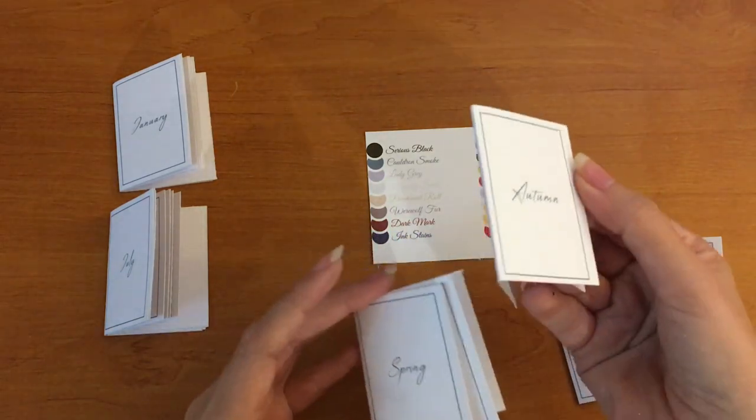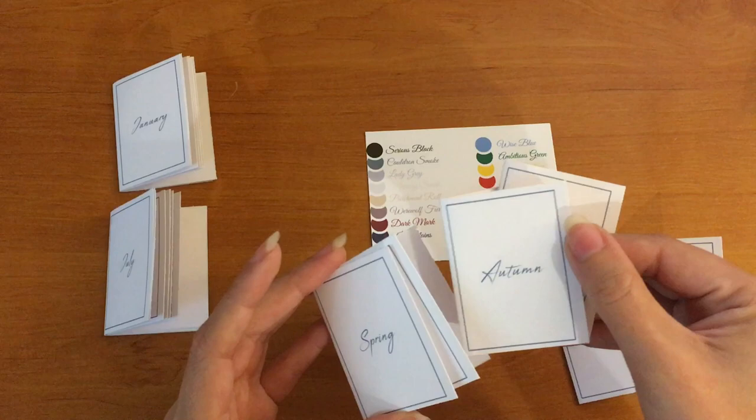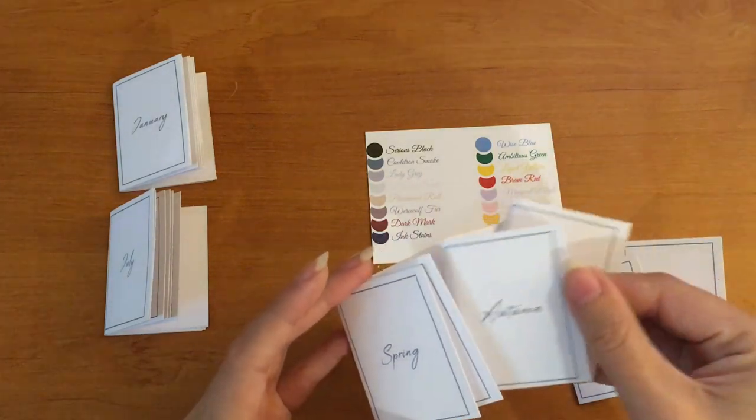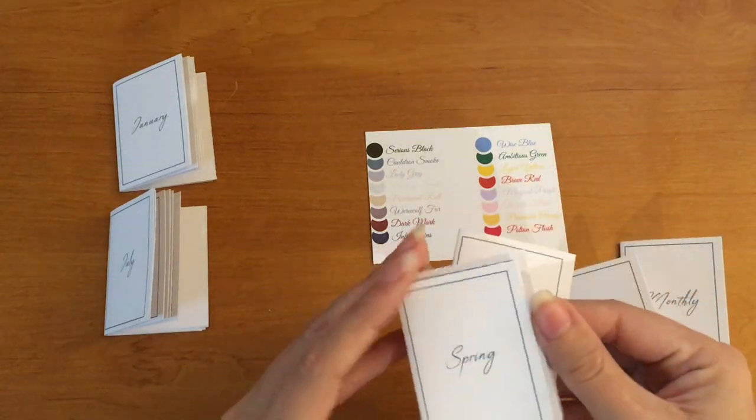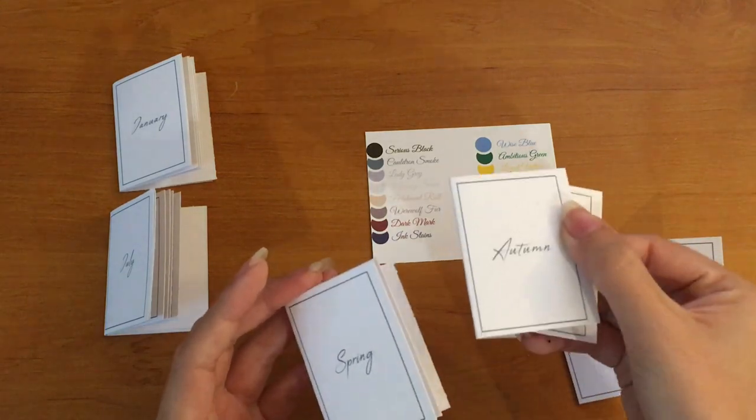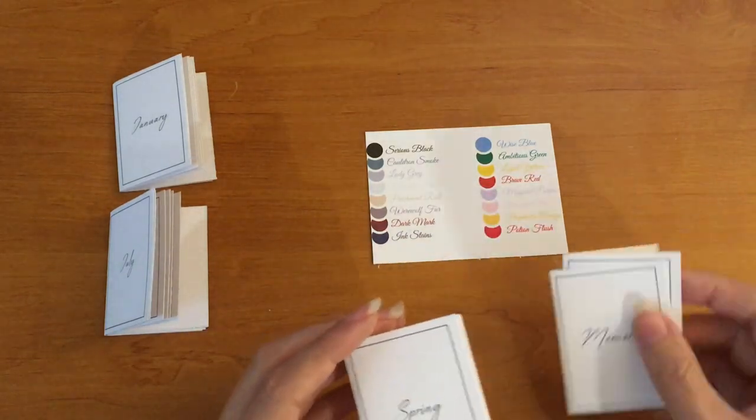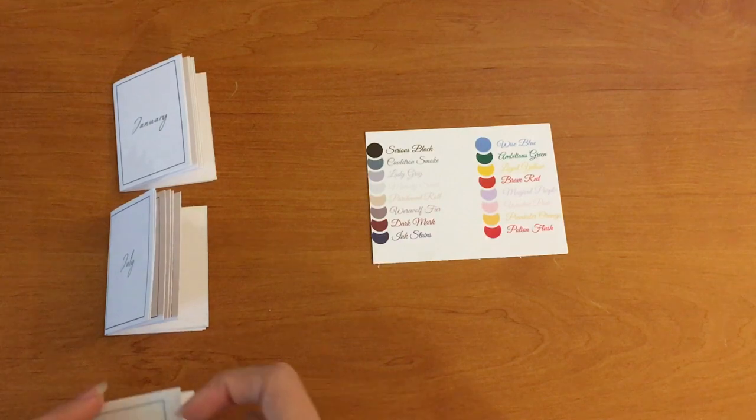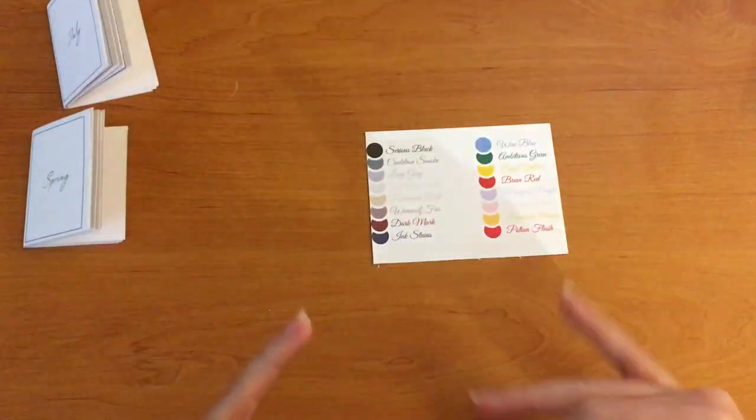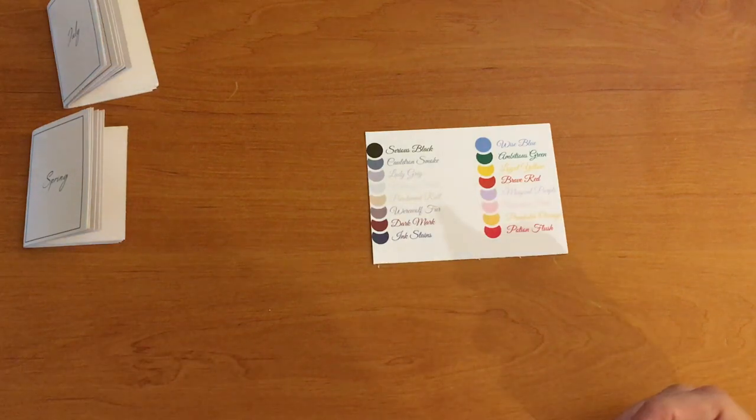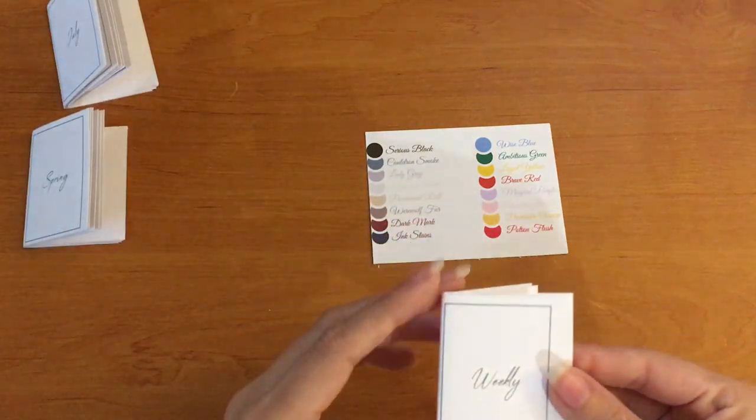And then you've got what I call a season one. So you've got a monthly memories and spring summer autumn winter. If you want me to change that to fall I can do that, just leave me a note when you order and I will change that. Otherwise by default it will come with autumn. It's the same you can choose the color.